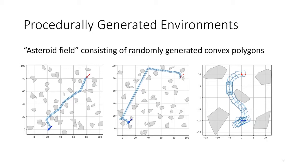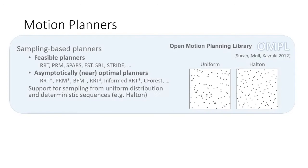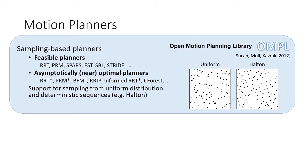At the core of BenchMR are the motion planning algorithms. We support sampling-based motion planners from the Open Motion Planning Library. These include the feasible planners, such as RRT or PRM, as well as asymptotically optimal planners, such as RRT star or PRM star. For all sampling-based planners, we support the sampling from a uniform distribution or a deterministic sequence, such as Halton sequence.